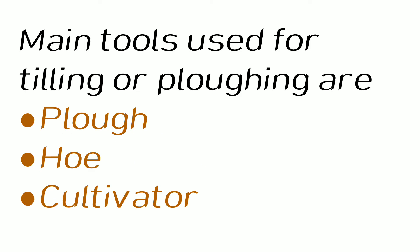Now let us look at the main tools that are used for tilling or plowing. They are the plough, hoe, and cultivator.